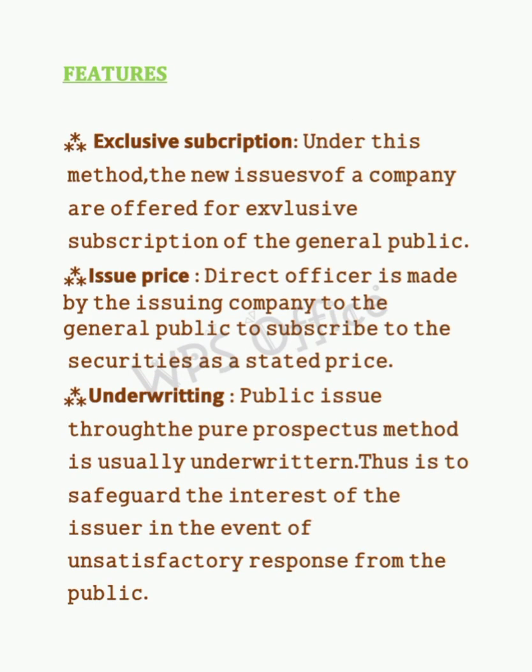Features of the Pure Prospectus Method: First, Exclusive Subscription — under this method, the new issues of a company are offered for exclusive subscription by the general public. Second, Issue Price — a direct offer is made by the issuing company to the general public to subscribe to the securities at a stated price. Third, Underwriting — public issues through the Pure Prospectus Method are usually underwritten to safeguard the interest of the issuer in the event of an unsatisfactory response from the public.